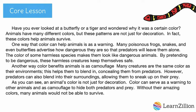The color of some harmless species makes them look like dangerous animals. By pretending to be dangerous, these harmless creatures keep themselves safe. Another way color benefits animals is as camouflage. Many creatures are the same color as their environments. This helps them to blend in, concealing them from predators. However, predators can also blend into their surroundings, allowing them to sneak up on their prey.